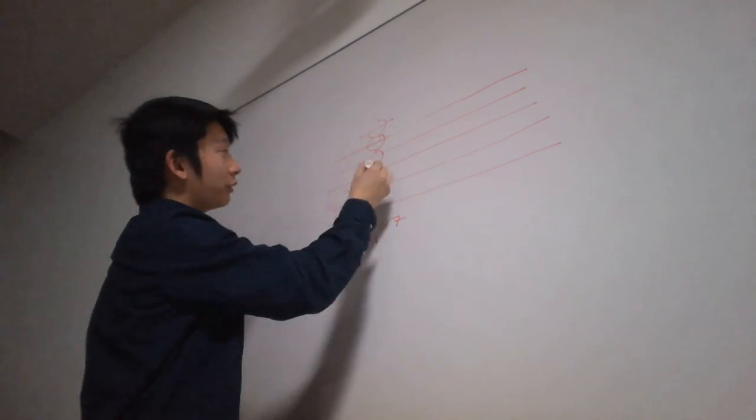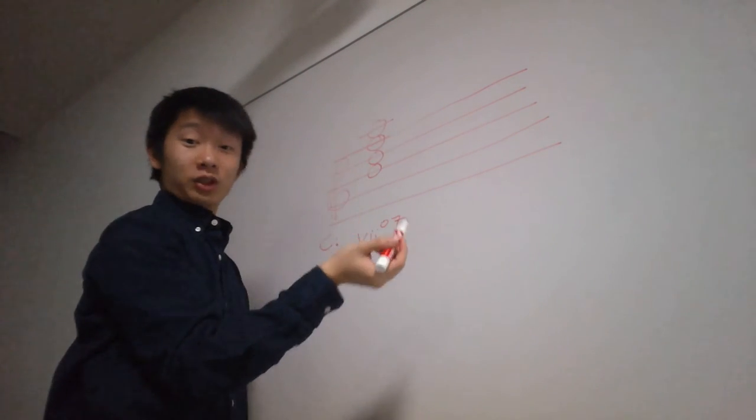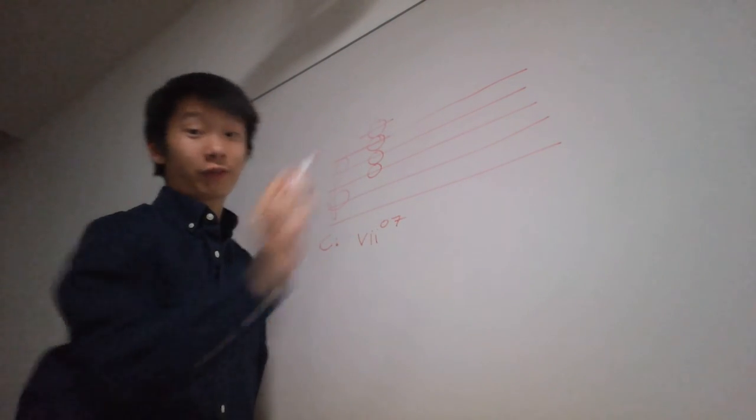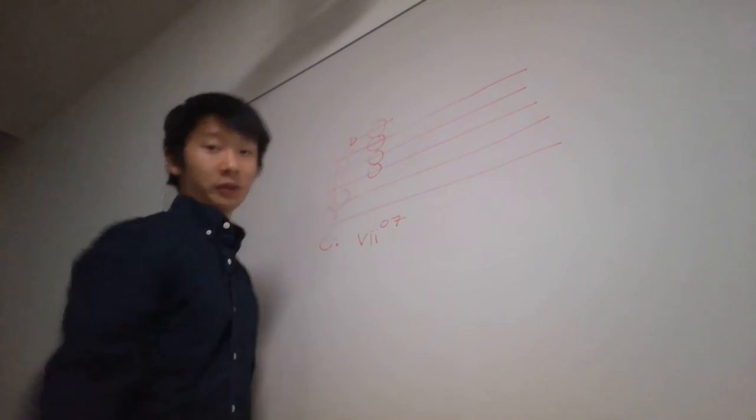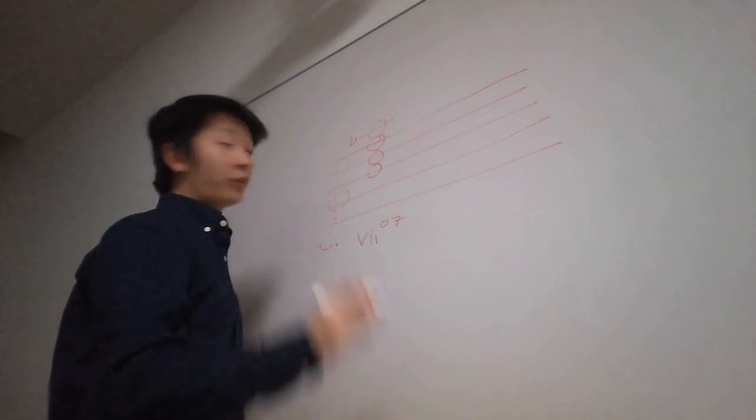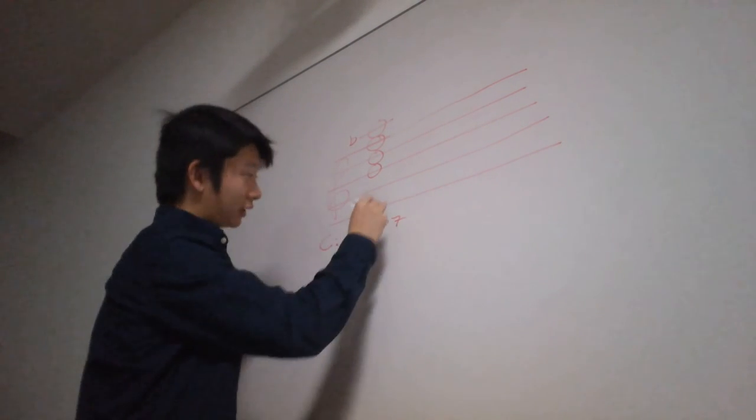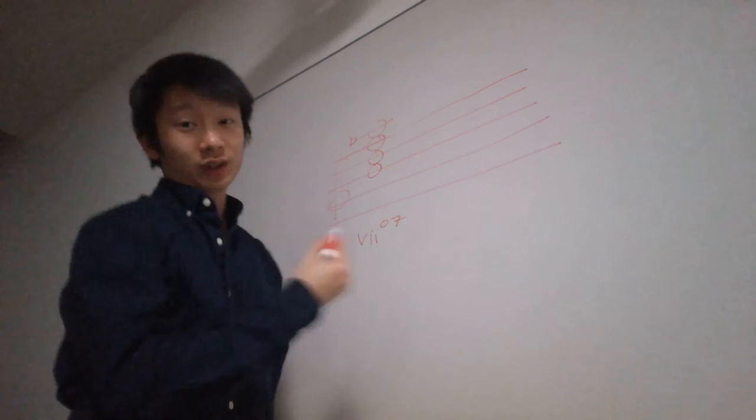Now this is a diminished chord, B, D, F. And to make it a fully diminished chord, we're going to have to flat this A on the top. Otherwise it would be a half diminished and you would put a cross through this. But this is a fully diminished chord.